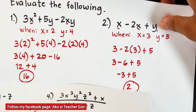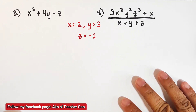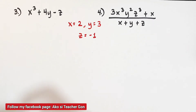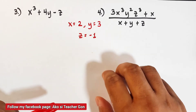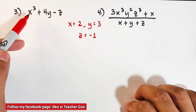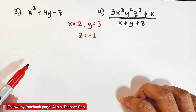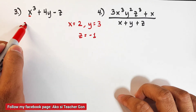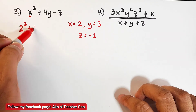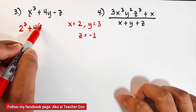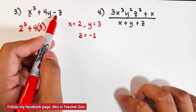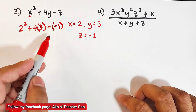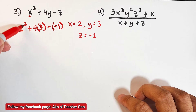Now let's try more complicated examples — this time involving 3 variables. For examples number 3 and number 4, we will be using x equal to 2, y equal to 3, and z equal to negative 1. In number 3, we have x cubed plus 4y minus z. We replace x by 2, giving us 2 cubed, plus 4 times 3, minus and z is negative 1 so we put parentheses around negative 1.